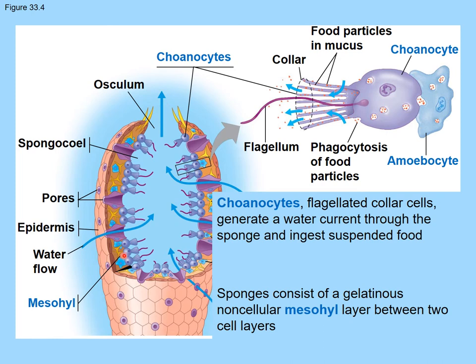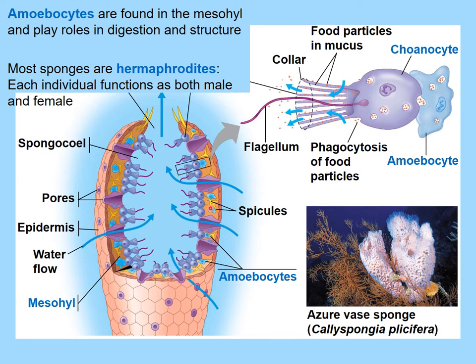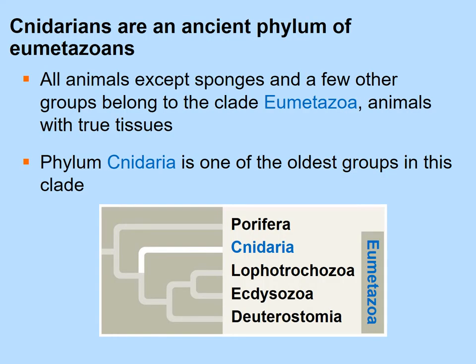Inside sponges there are spicules made of silica or calcium, which provide structural strength. Amoebocytes participate in digesting and distributing food. Most sponges are hermaphroditic, meaning they possess both male and female reproductive structures.